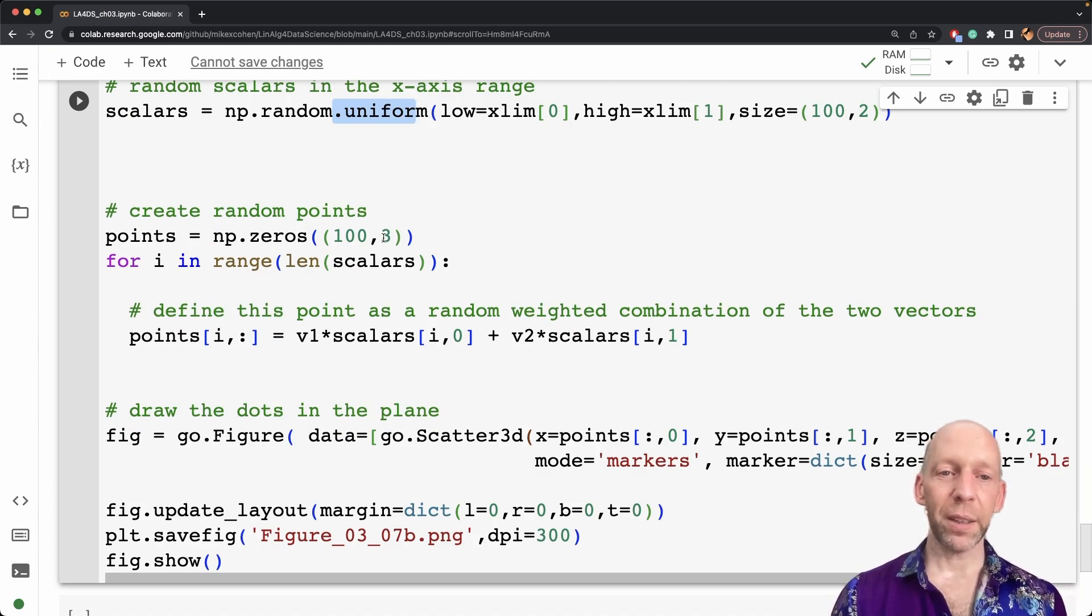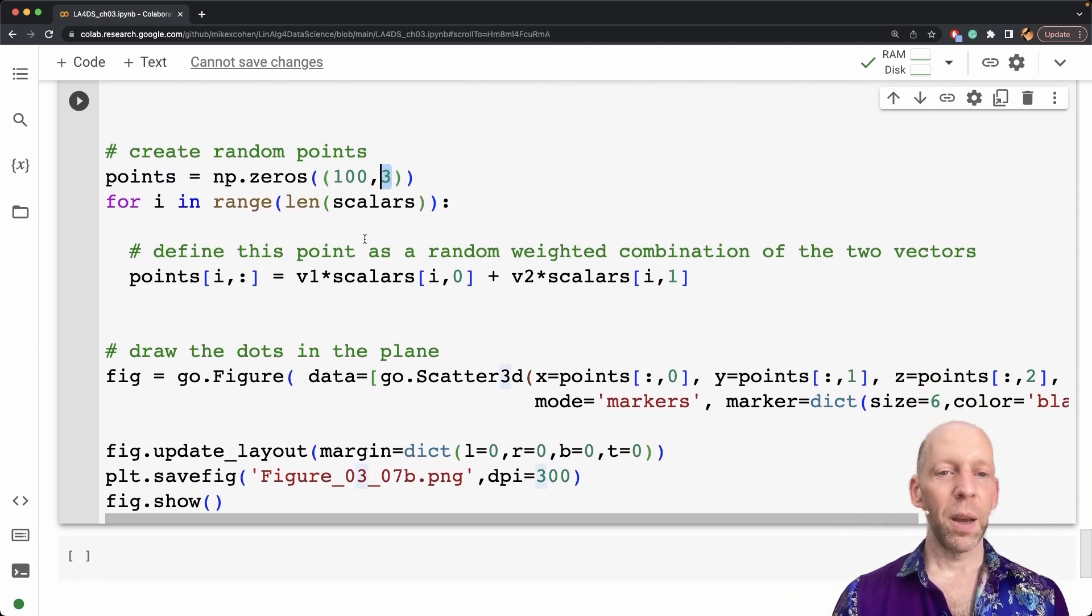And now there's two vectors, but the vectors are in 3D. They are in a three-dimensional ambient space. So therefore, the points actually need to be 100 by 3. So the x, y, z coordinates.